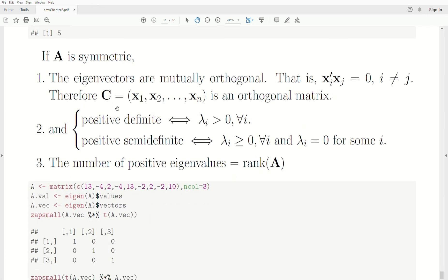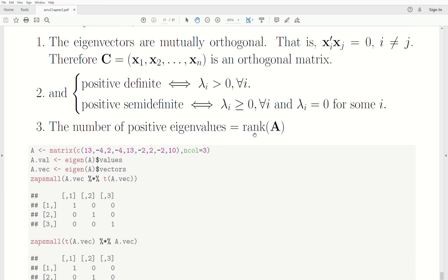This is the last topic. If A is symmetric, the eigenvalues are mutually orthogonal. That is that their dot product is 0, they're all at 90 degrees to each other. Therefore, this matrix C that contains the eigenvectors is an orthogonal matrix or an orthonormal matrix. If it's positive definite, it means all the eigenvalues are strictly greater than 0. Positive semidefinite means the eigenvalues are non-negative, they could be 0. The number of positive eigenvalues equals the rank.